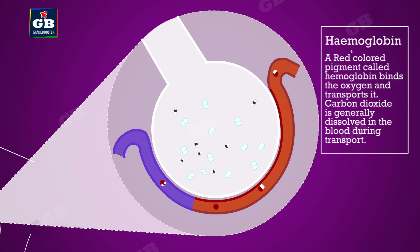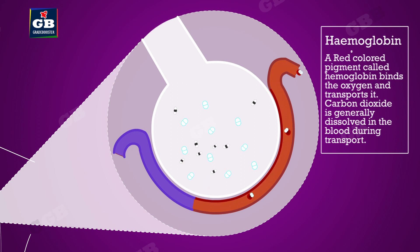A red-colored pigment called haemoglobin binds the oxygen and transports it. Carbon dioxide is generally dissolved in the blood during transport.